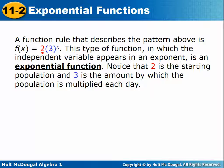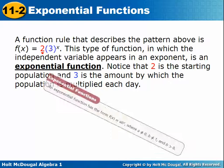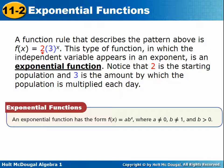A rule that describes this pattern could be written as two times three to the x. The two is what population we started with, and the three is that common ratio — what we are multiplying each time each day. It is to the x power, so our variable is an exponent. That's different than the other functions we have looked at so far.